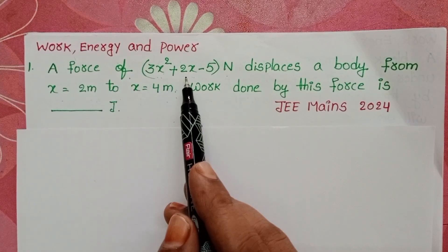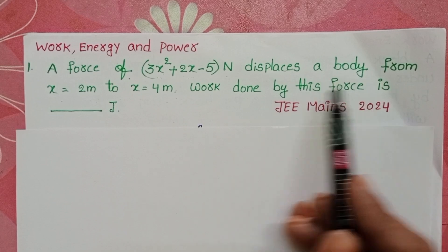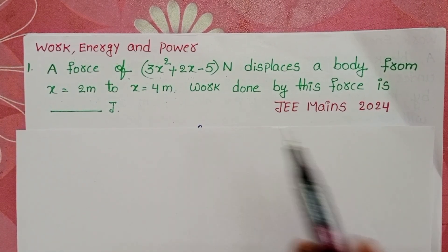A force of 3x² + 2x - 5 newton displaces a body from 2 meters to 4 meters. What work done by this force is?